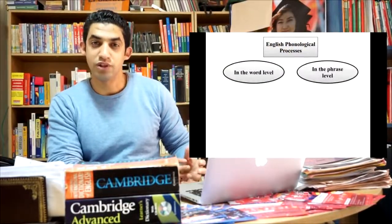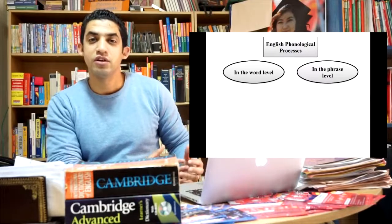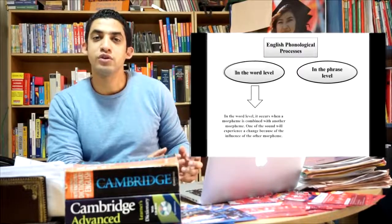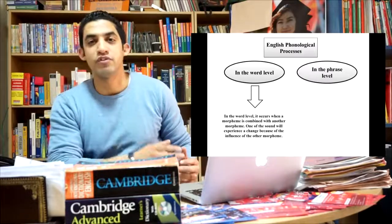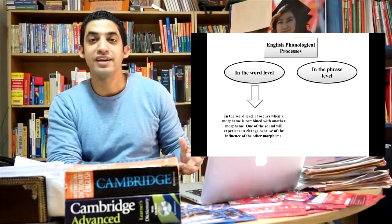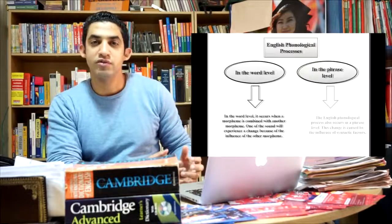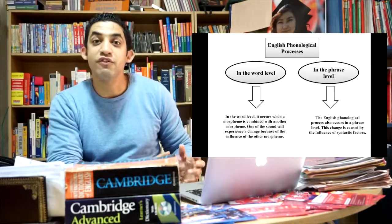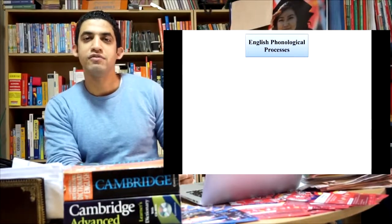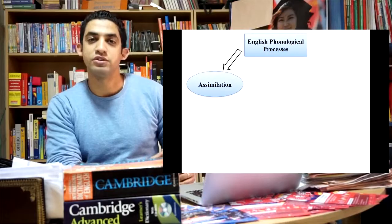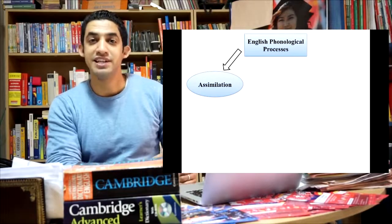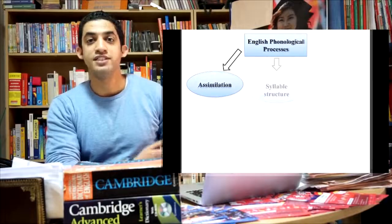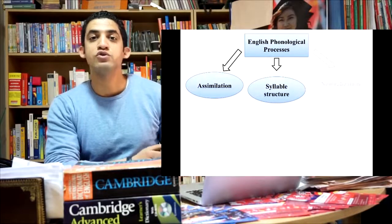The English phonological processes occur in two different levels: in a word level or in a phrase level. In a word level, it occurs when one morpheme is added to another morpheme. In this case, one segment will influence the other segment. In a phrase level, this is caused by certain syntactic factors that we're going to see more examples on. English phonological processes can be divided into three major categories: we have assimilation processes, we have syllable structure processes, and we have neutralization.